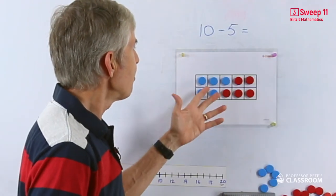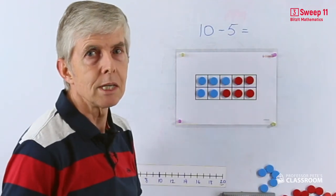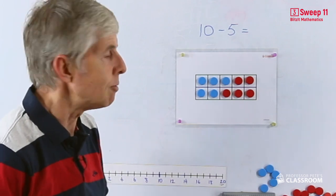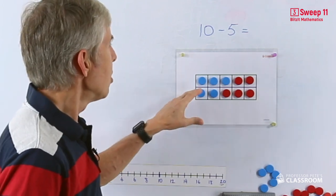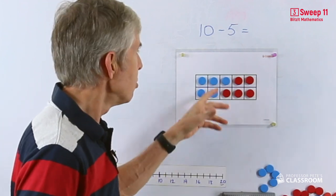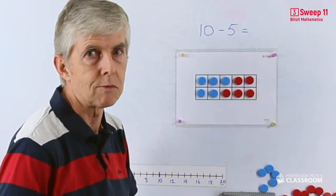Here's the one in the middle, 10 take away five. Whichever way we put this, it's going to be easy to see the result, so we can have a row of five and another row of five in different colors, or this one, which of course is a pairs arrangement.